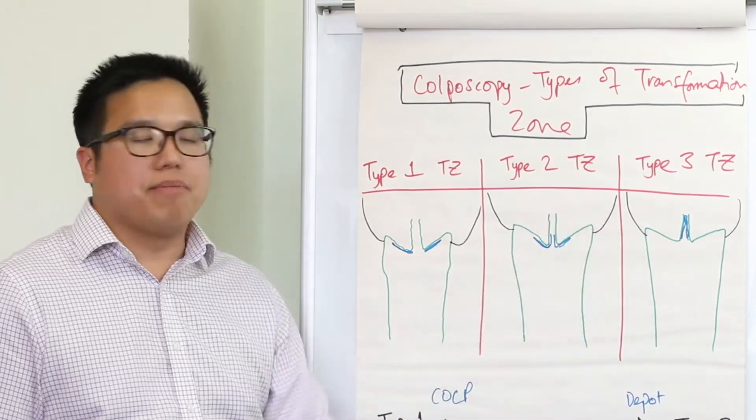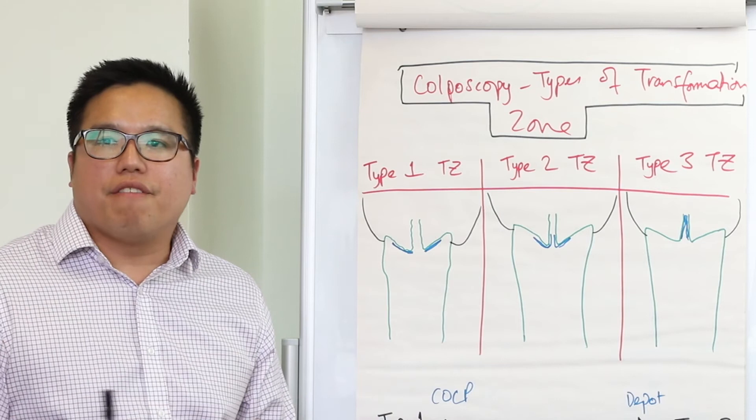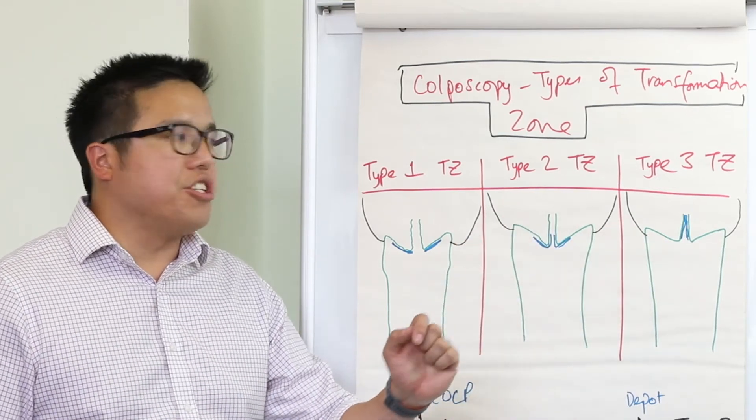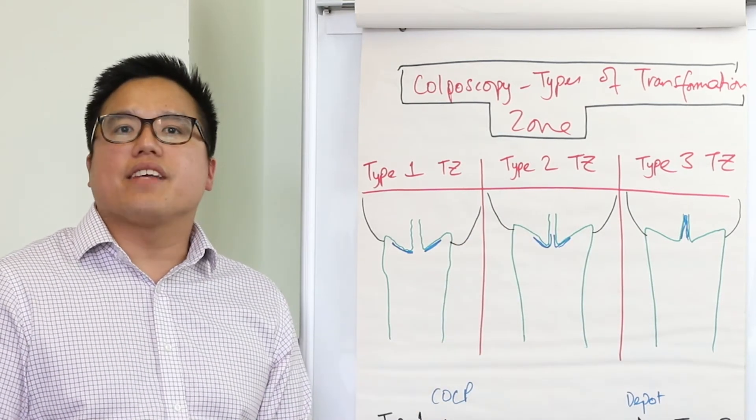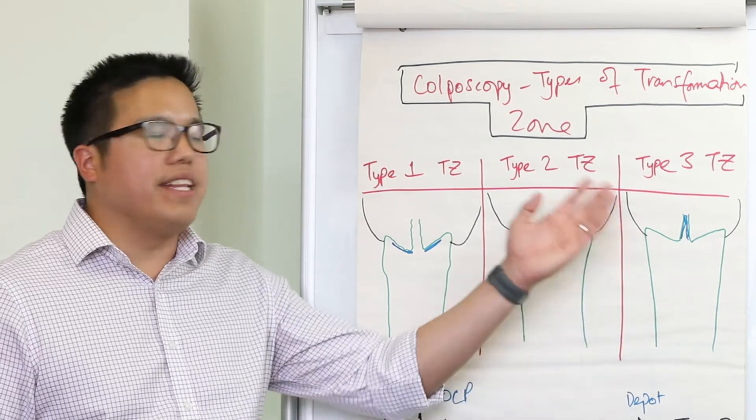Lastly, for type 3 transformation zones, these are the most tricky for the colposcopists because the squamous columnar junction is not visible, as the whole of the transformation zone is within the endocervix.